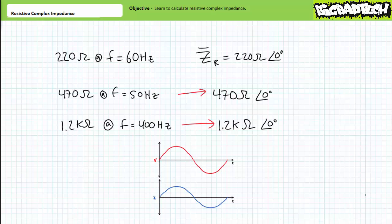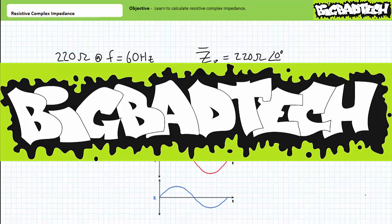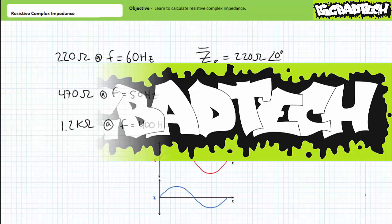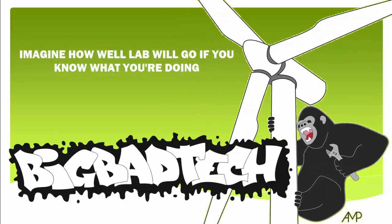In conclusion, this lecture examined resistive complex impedance. The complex impedance of a resistor is equal to the magnitude of the resistance R at an angle of zero degrees. Remember to review these concepts as often as you need to really drive it home — imagine how well lab will go if you know what you're doing. Thank you very much for your attention and interest, and we'll see you again during the next lecture of our series. Remember to tell your lab partner about this resource, and be sure to check out the Big Bad Tech channel for additional resources and updates.